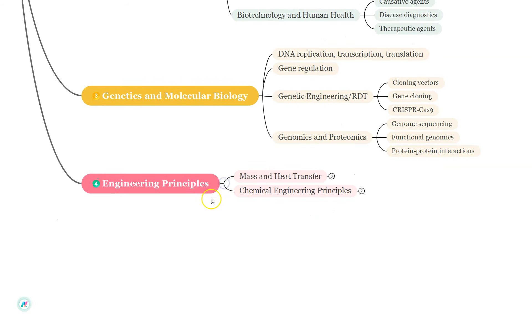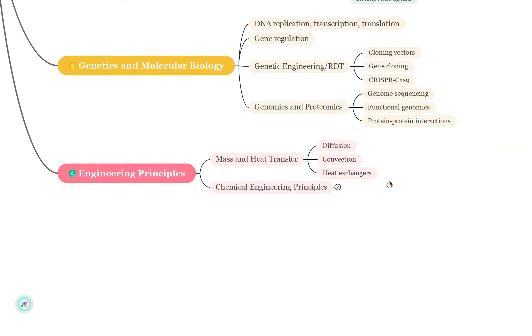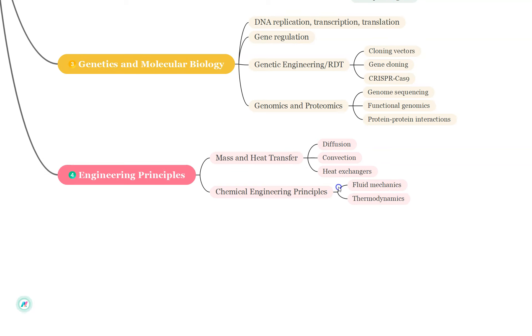Next is Engineering Principles which have been recently added to the GATE BT syllabus. Under this, focus on Mass and Heat Transfer. Topics such as Diffusion, Convection, Heat Exchangers focus on the Numerical Problems and the Formulas also. Chemical Engineering Principles: Fluid Mechanics and also the Classical Thermodynamics, even Bio-Energetics should be focused on.